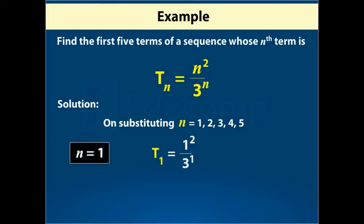For n equal to 1, T1 is equal to 1 over 3. For n equal to 2, T2 is equal to 4 over 9.